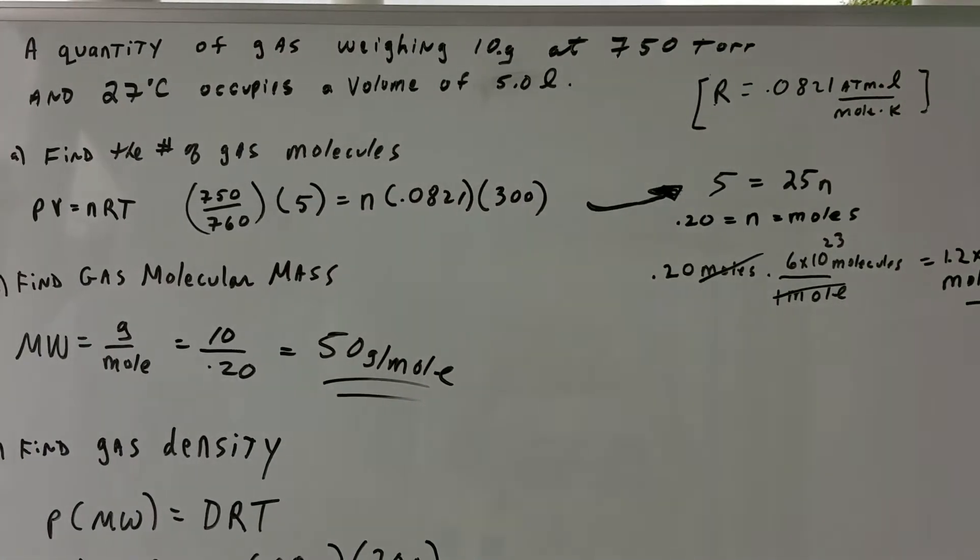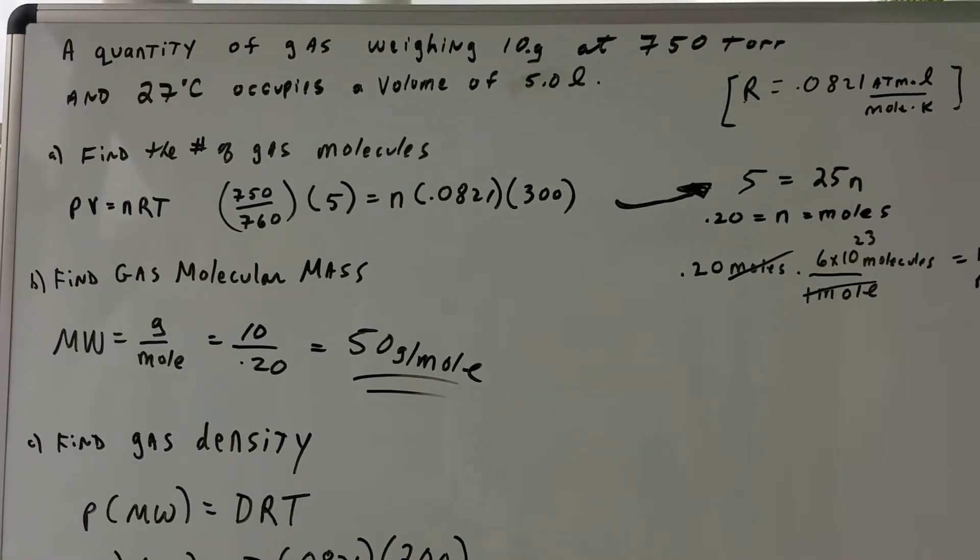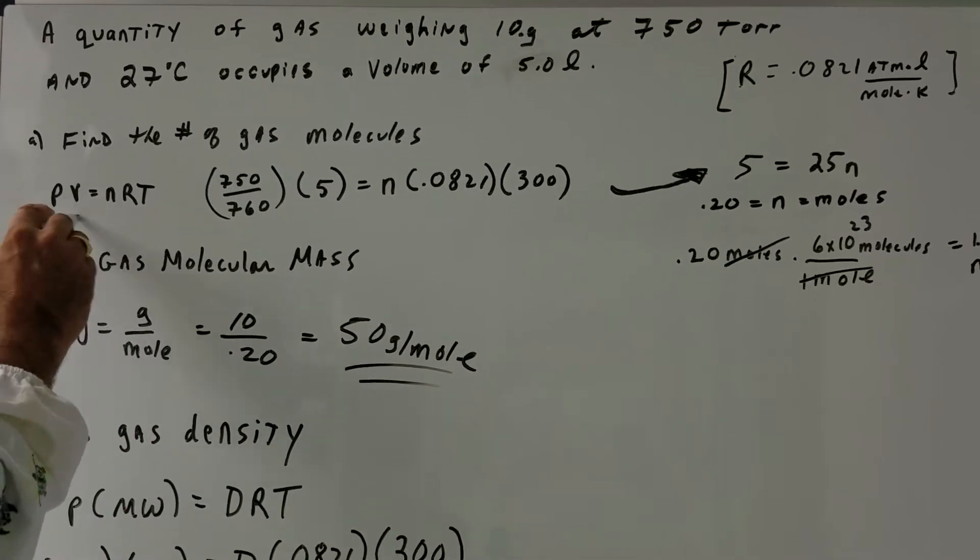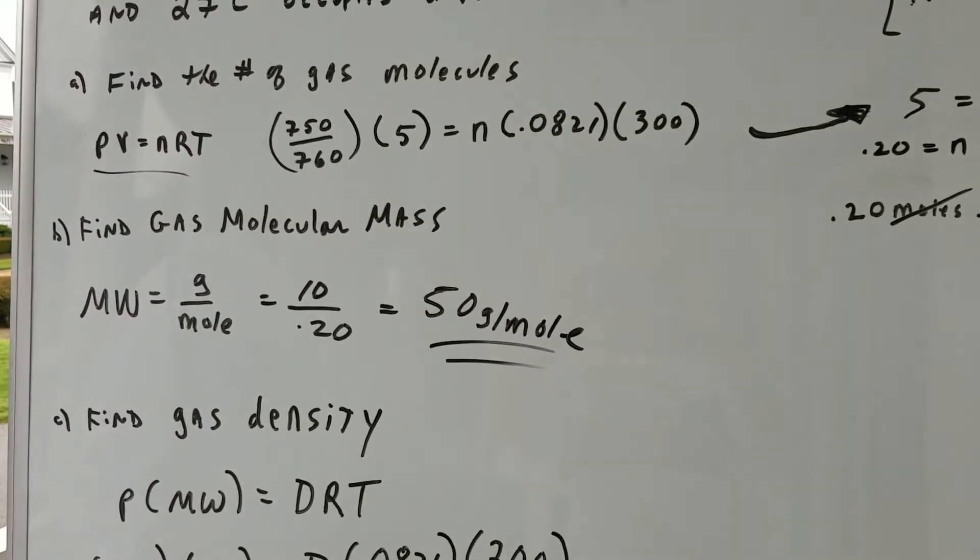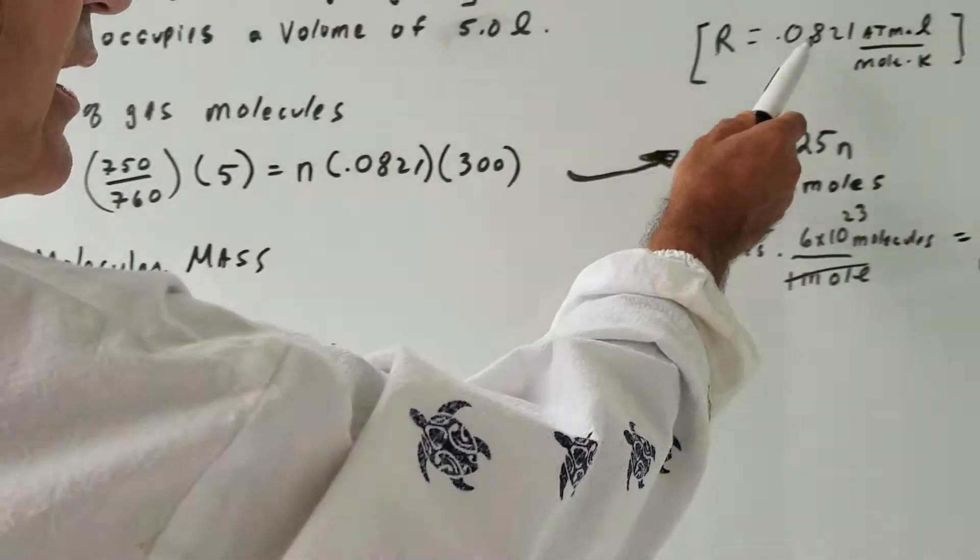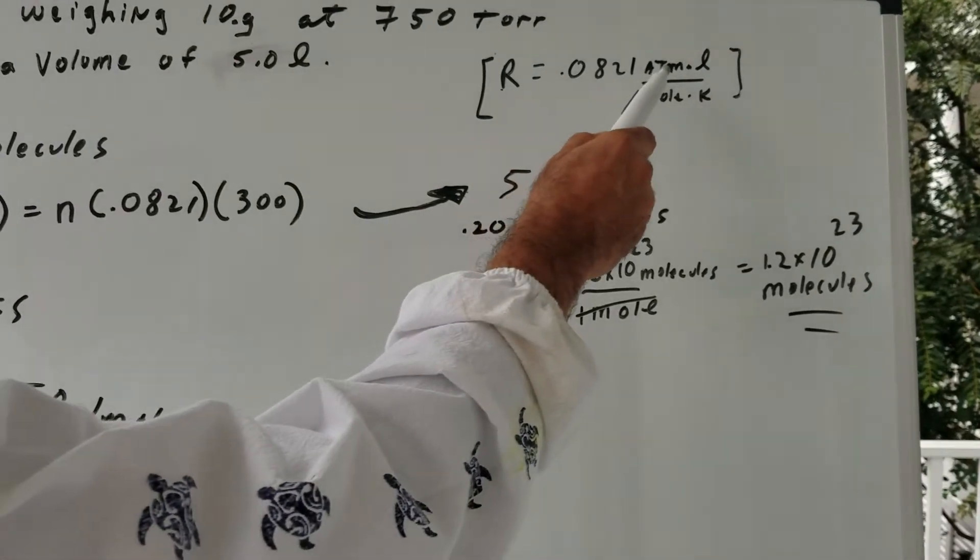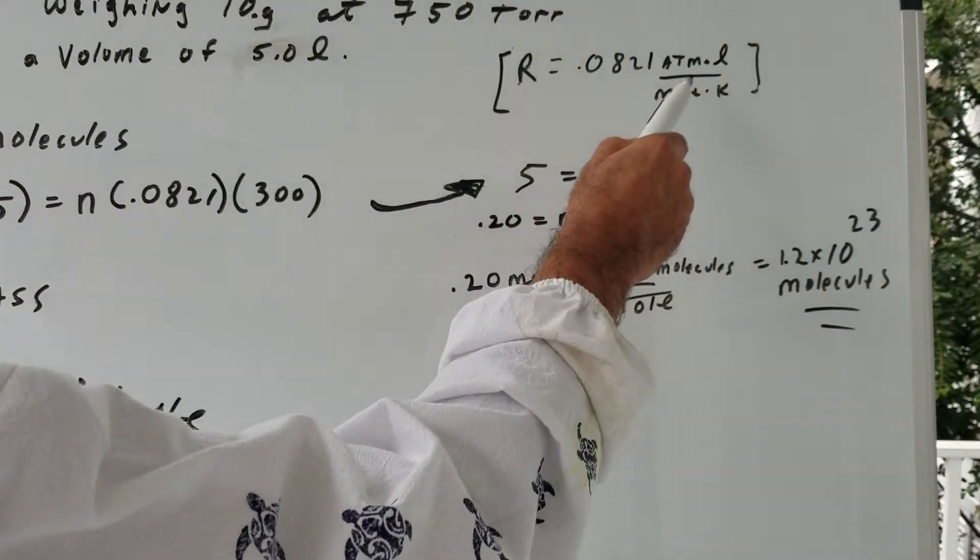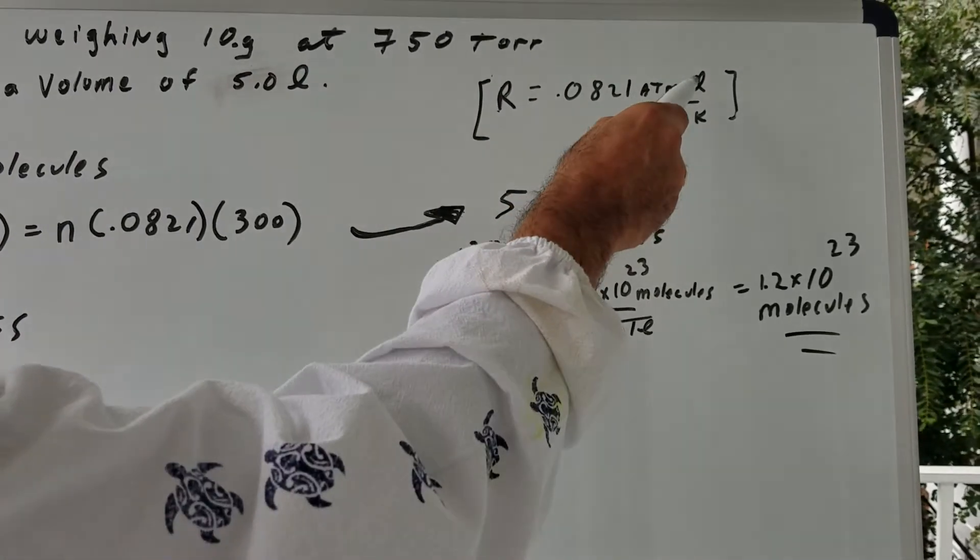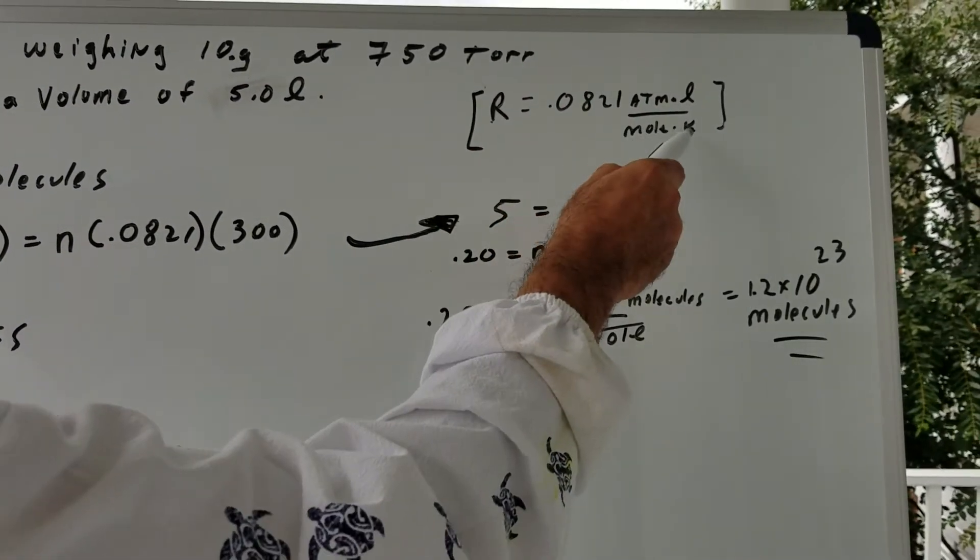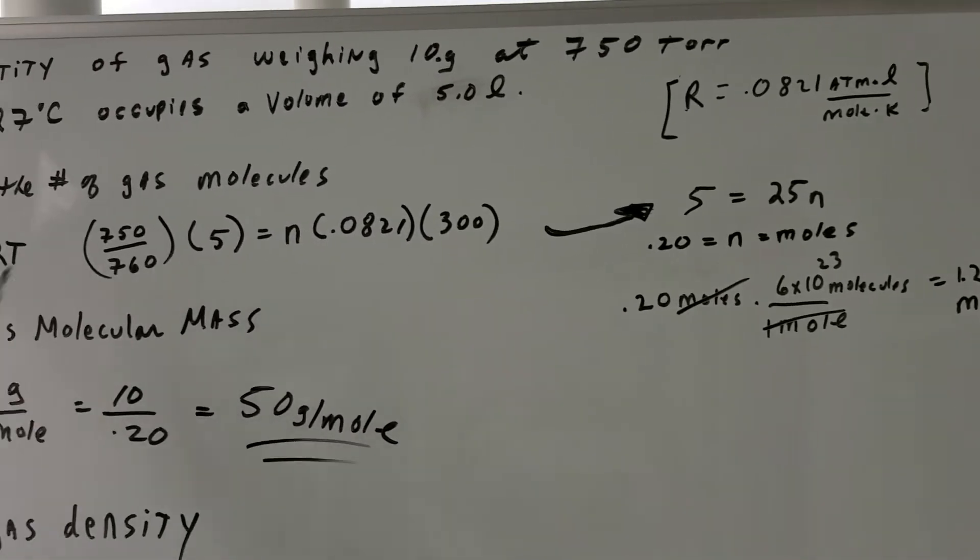Any gas that you see on the DAT exam, we're always going to assume it's an ideal gas. And therefore, it obeys the equation of state PV equals NRT. Now, the R is a constant, and they give you the constant as 0.0821. But notice the units: atmospheres, liters, moles, Kelvin. So that means the pressure must be in atmospheres, volume is in liters, and the temperature must be converted into Kelvin.